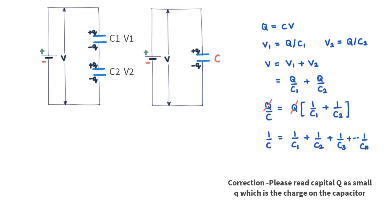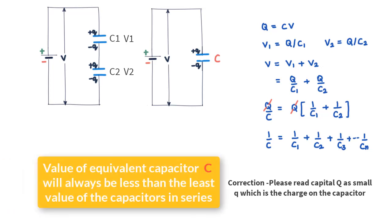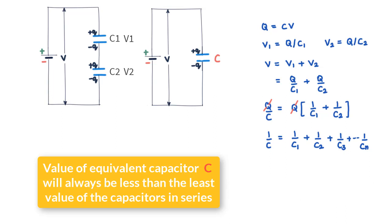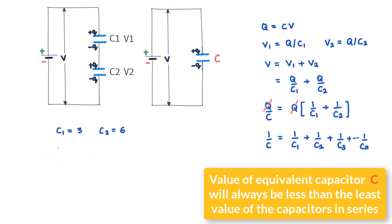By this formula, the equivalent capacitor value C will always be less than the least value of the capacitors in series. As an example, if two capacitors have values of 3 microfarad and 6 microfarad respectively, then 1/C = 1/3 + 1/6 = 1/2, so C = 2 microfarad — which is less than both 3 and 6 microfarad.